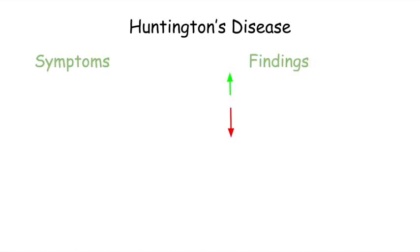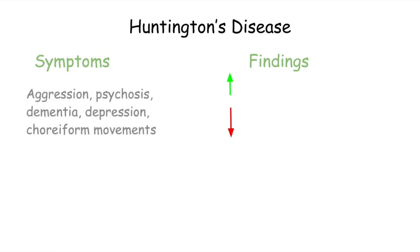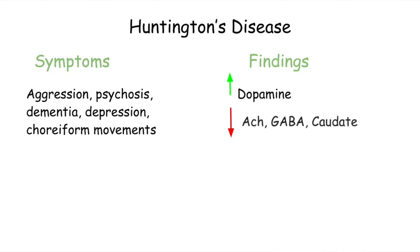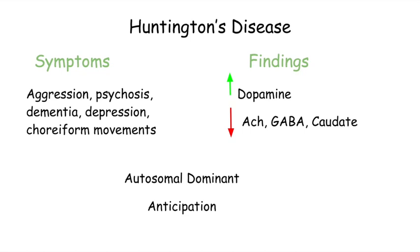Let's take another look at the clinical findings of Huntington's disease. Symptoms include aggression, psychosis, dementia, depression, and choreiform movements. There is an increase of dopamine because the D's are dominant, but there is a decrease of acetylcholine, GABA, and caudate. Huntington's disease is autosomal dominant, and these patients experience anticipation.